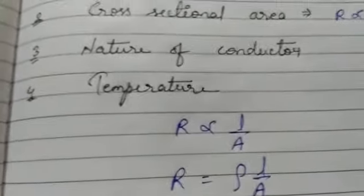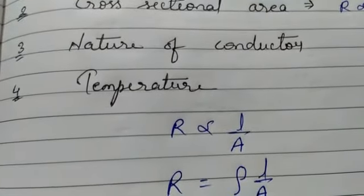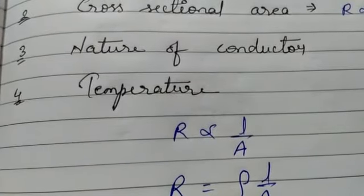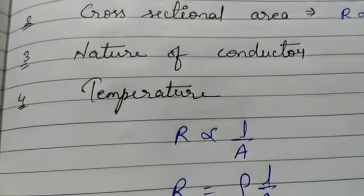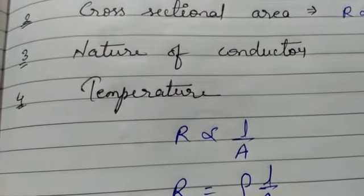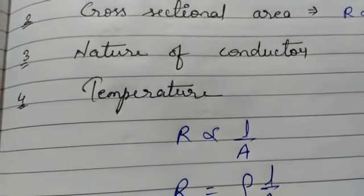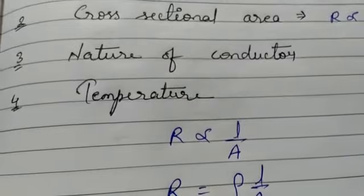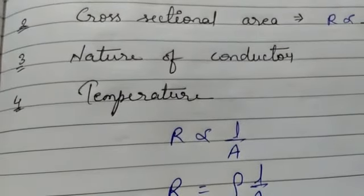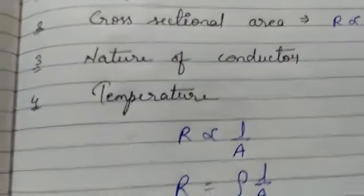Fourth is temperature. How resistance depends on temperature is different for different materials. For metals, with an increase in temperature the resistance also increases. But it is not the same for semiconductors and other materials. How resistance depends on temperature will be discussed in another topic. But for metals, resistance increases with increasing temperature.